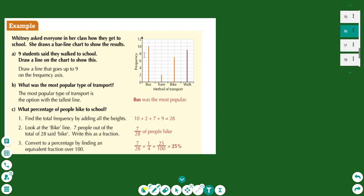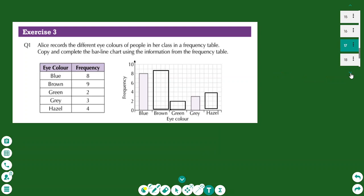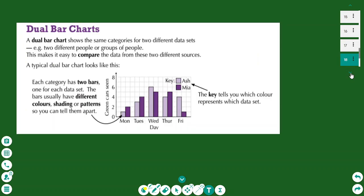Line charts are similar to bar charts, except instead of a bar we draw a line — everything else is the same. Dual bar charts use two bars for each category, allowing easier comparison between two datasets. If you liked the lesson, please subscribe and press the like button to see more lessons like this. Thank you.